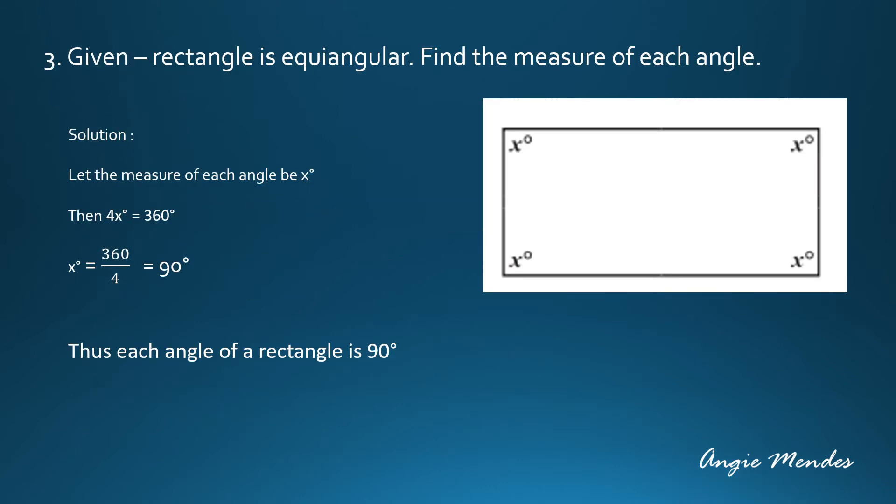Now let us consider the example of a rectangle. Here given the rectangle is equi-angular, find the measure of each angle. So first we are going to begin by drawing the figure of a rectangle. It is given that the rectangle is equi-angular which means the angles are the same measure. So we will take each angle to be X degrees. Now there are four angles. So 4X will be equal to 360 degrees.